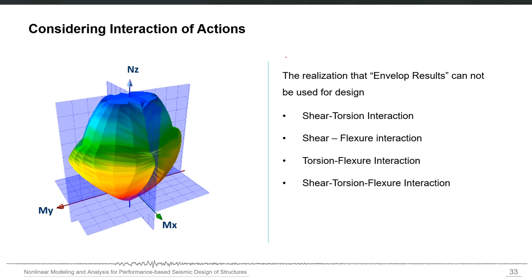We also consider the interaction of actions in this approach, since different actions within a member interact with each other. The most common is axial load and moment interaction, also called PM interaction, but we can also have shear-torsion interaction, shear-flexural, torsion-flexural, or shear-torsion-flexural interaction at different levels of complexity. The most common type of interaction considered in design — mostly for columns — is the PM interaction, the axial load and flexural action interaction.